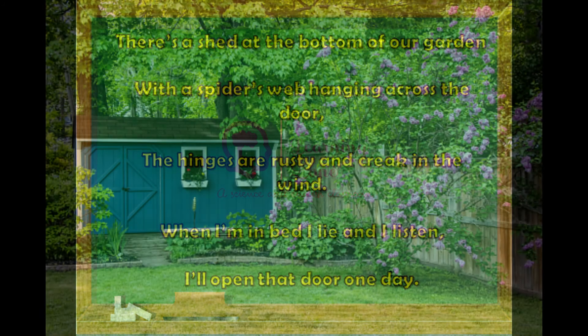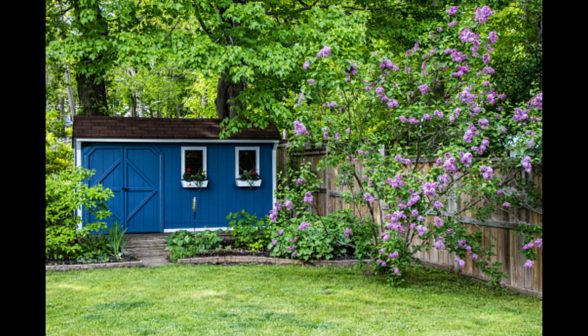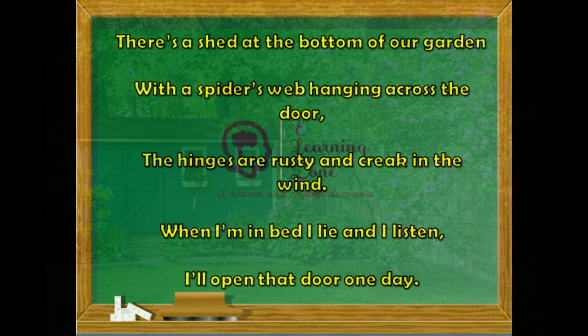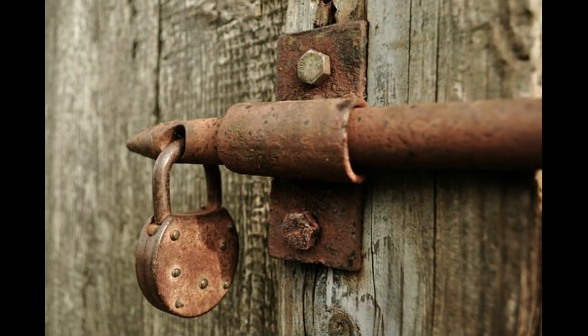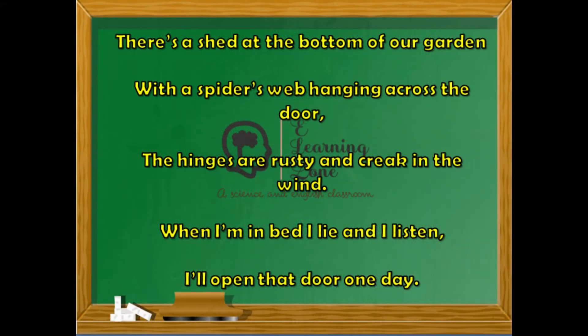This poem is about a shed and the child who is the speaker feels scared while passing through it. The child says there is a shed at the bottom of the garden — at the end of the garden. No one goes inside, which is why there are spider webs hanging on the door. The hinges are rusty and creak in the wind, showing the shed has not been used for long and no one has bothered to oil the hinges.